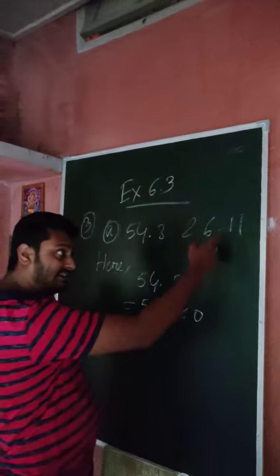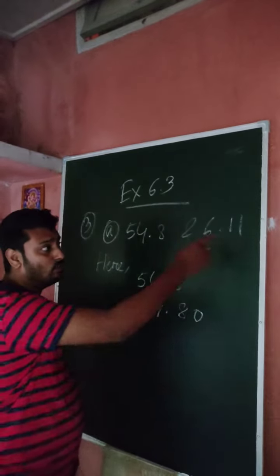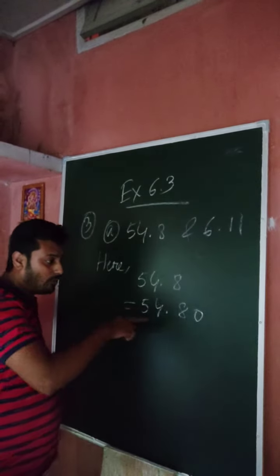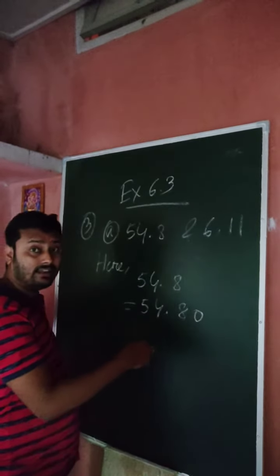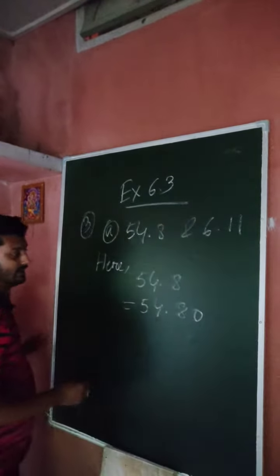Why you put a zero here? Because in this case, after the decimal, there are two digits. So, you have to form, you have to make, in this case also, after the decimals, two digits. So, you just put a zero here.